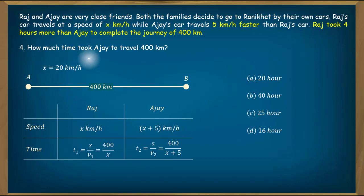Last question: How much time does Ajay take to travel 400 km? Ajay's speed is x plus 5, which is 25 km per hour. Time equals distance by speed, so 400 upon 25, which is 16 hours. This is the answer.